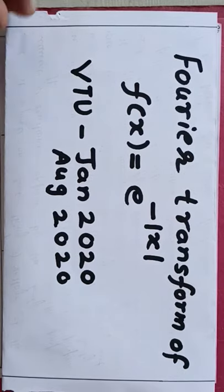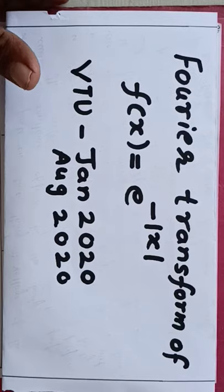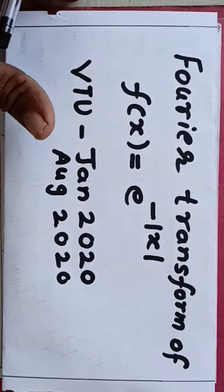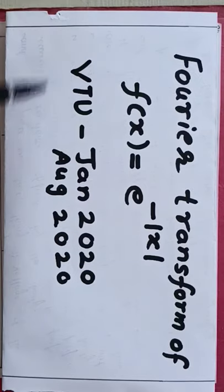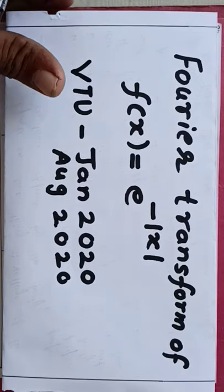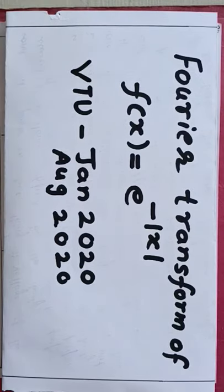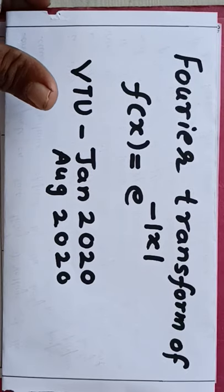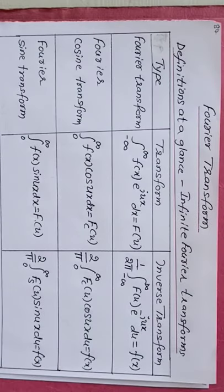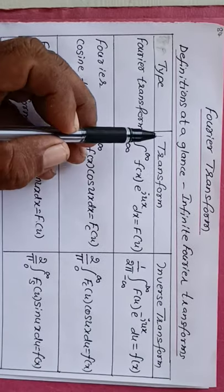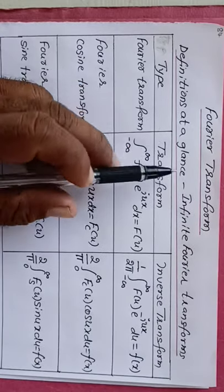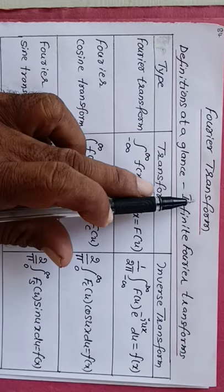For third semester B.E. students, the subject code is 18MAT31. Before solving, we will check the applications of Fourier transform.